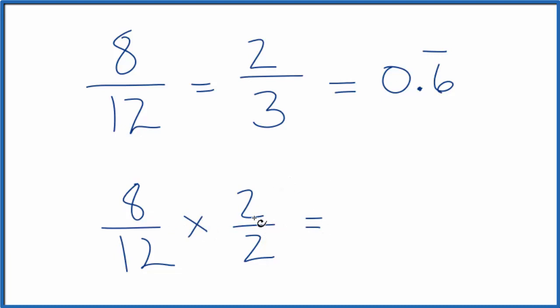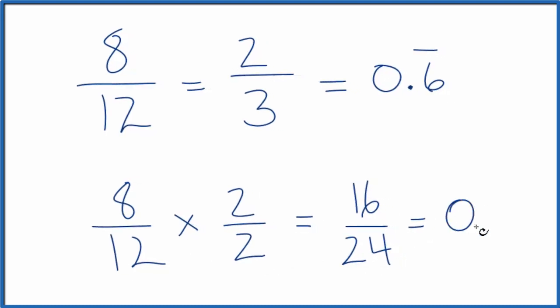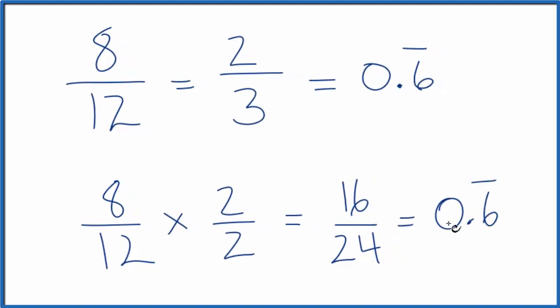But now if we multiply 8 by 2, that gives us 16. 12 by 2 is 24. And if you divide 16 by 24, you get 0.6. So that's the same value as we got for 2 thirds or 8 twelfths.